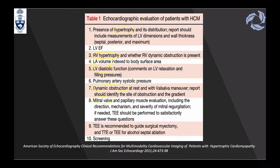According to Table 1 of the guidelines, assessment must include hypertrophy measurement, right ventricular dimensions and wall thickness, septal, posterior, and maximum wall thickness, systolic function, right ventricular hypertrophy, indexed left atrial volume, diastolic function, pulmonary artery systolic pressures, dynamic obstruction, and mitral regurgitation. Anything above 11 mm in the LV is hypertrophy, and above 5 mm in the RV is hypertrophy.